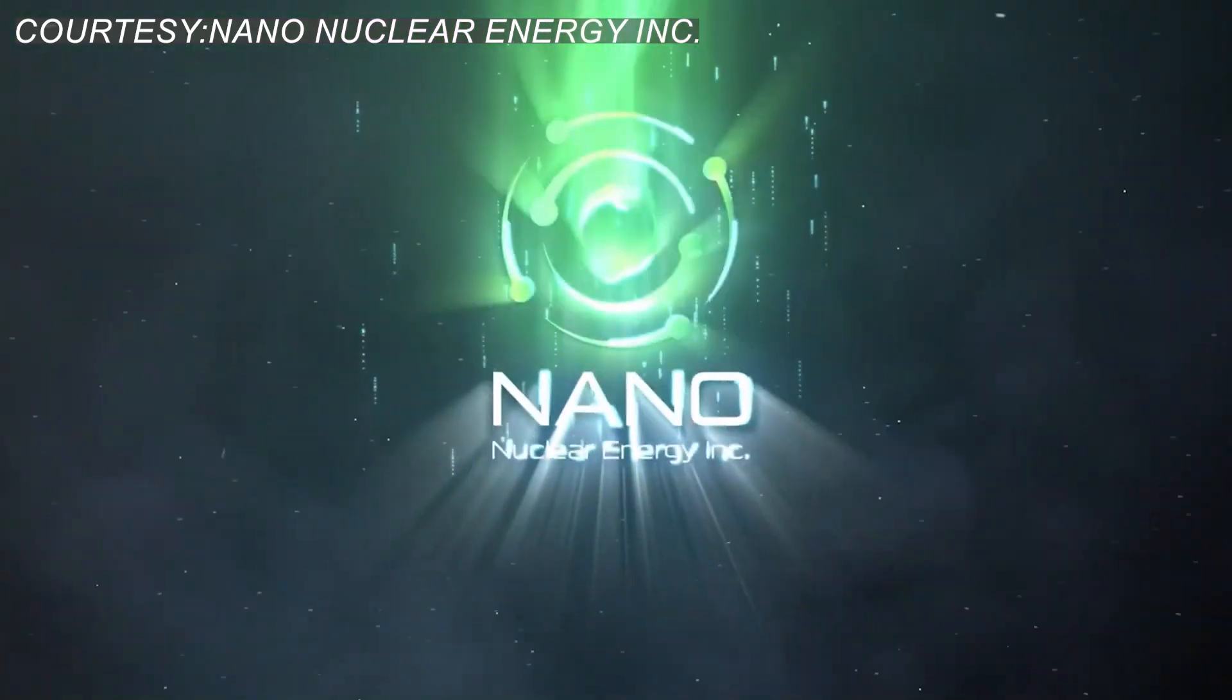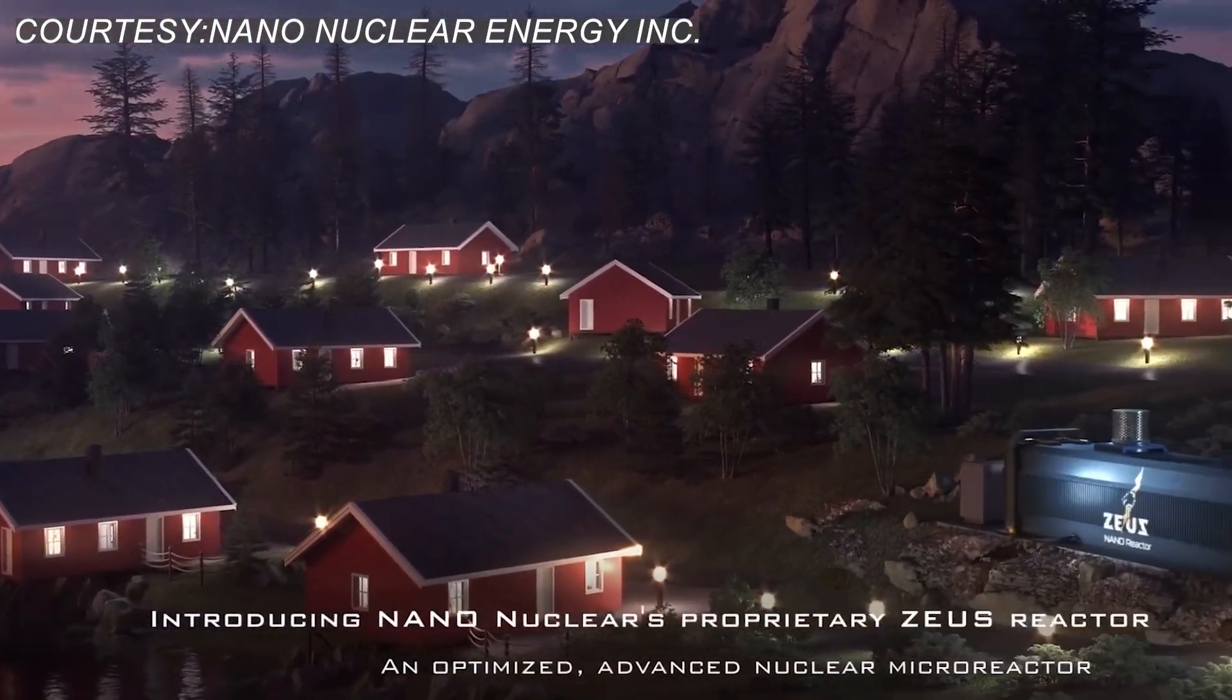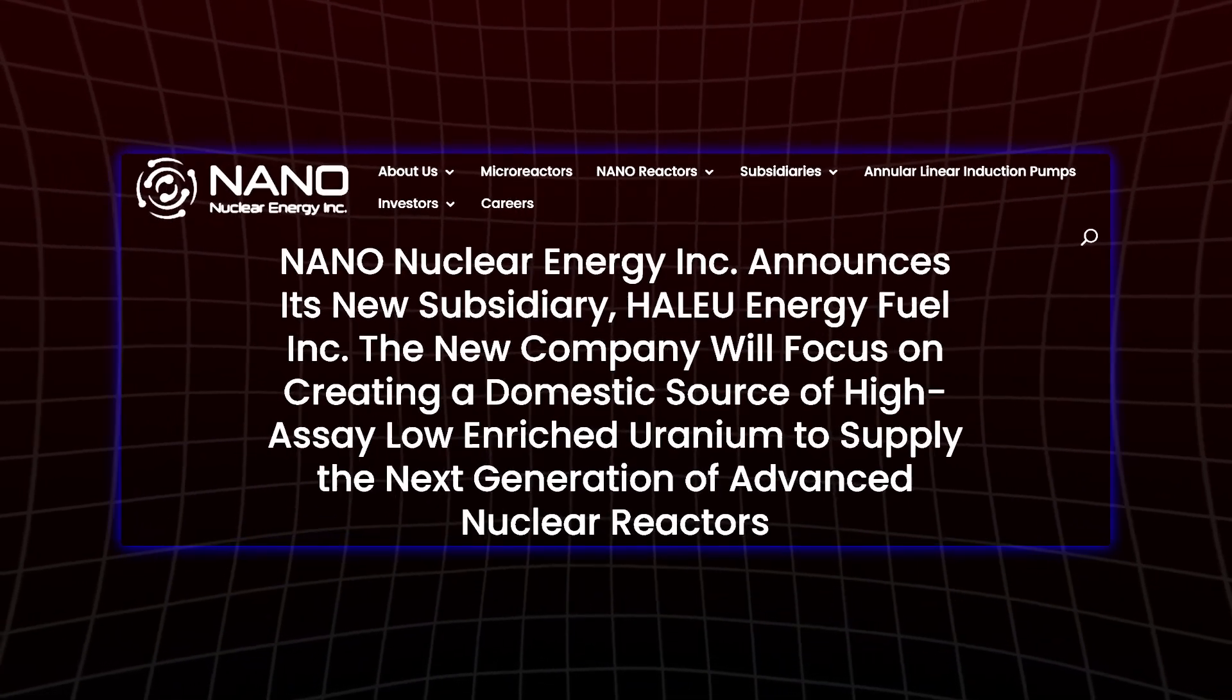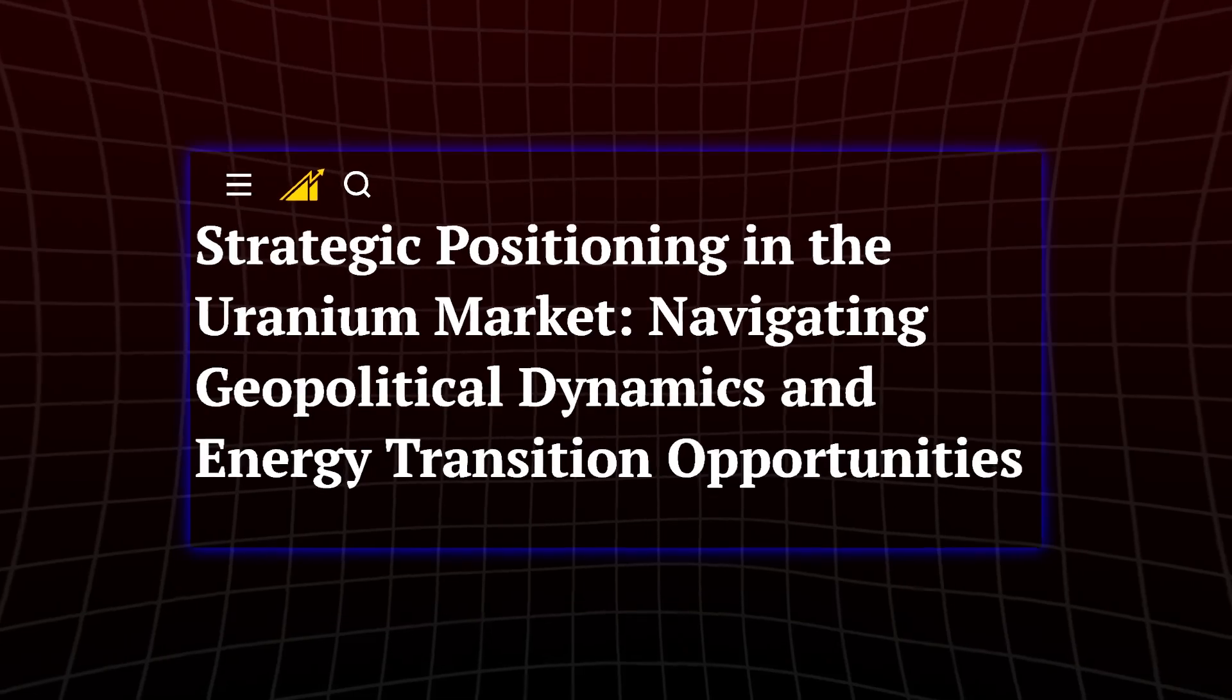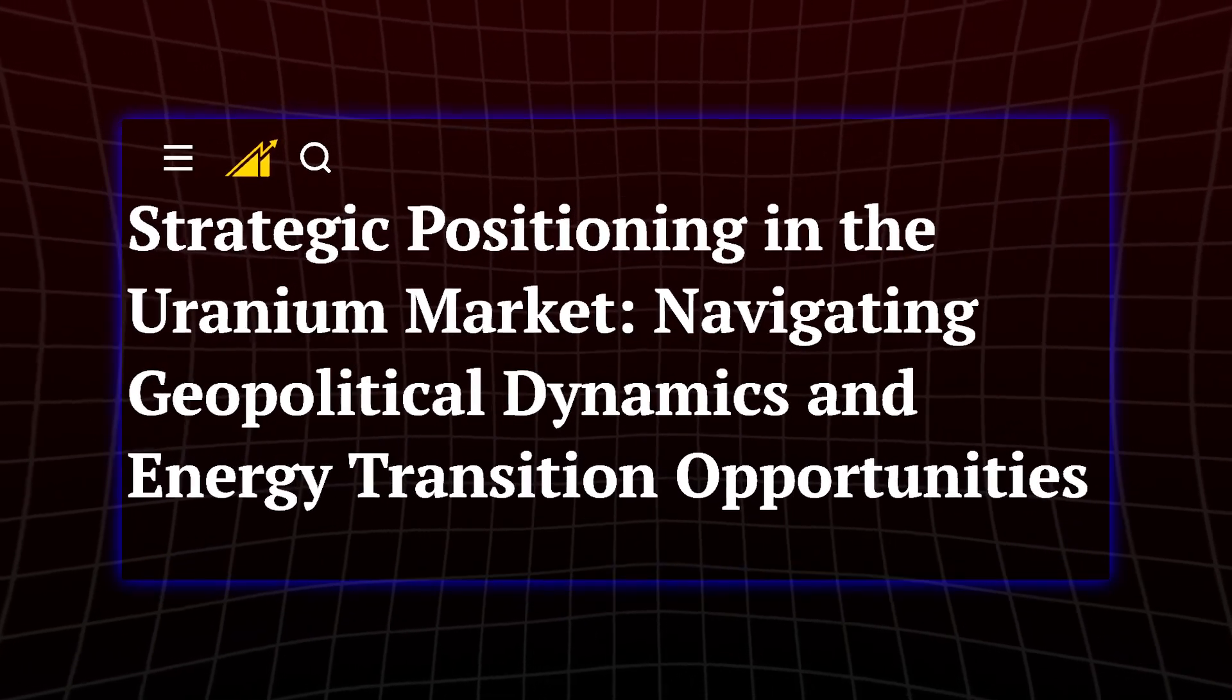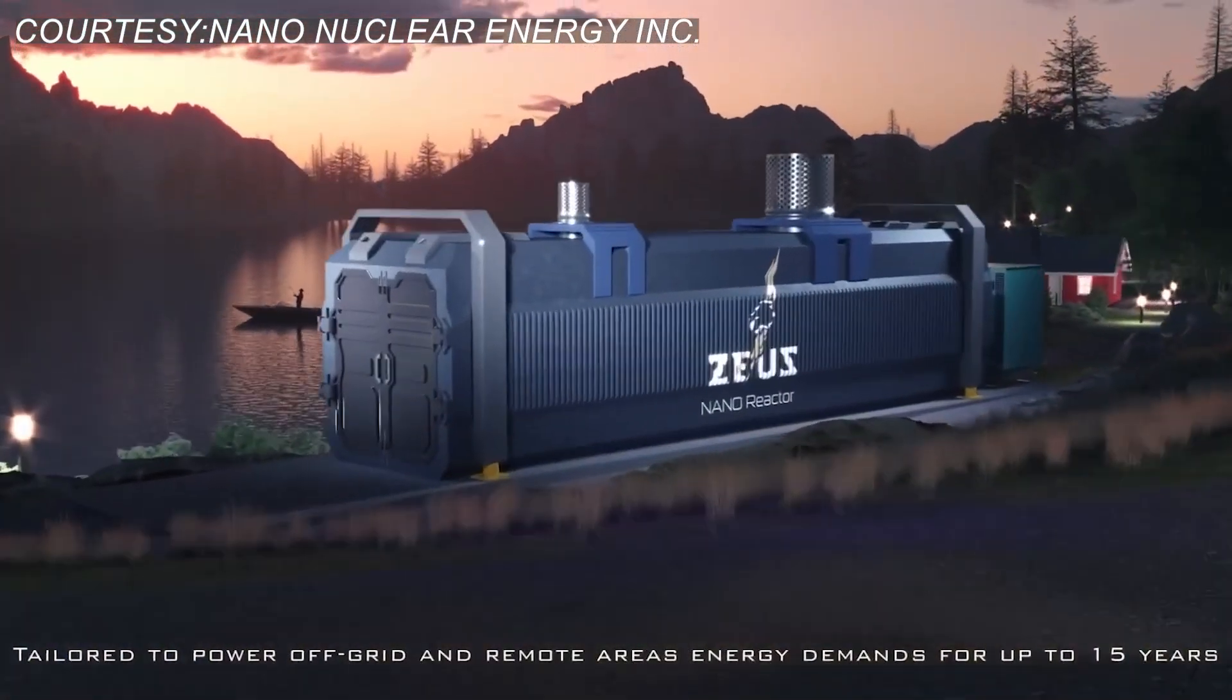What sets Nano apart isn't just its innovation, but its vertical integration. Through its subsidiary, the company produces HALU, a next-gen nuclear fuel that most advanced reactors, including their own, require. With uranium shortages looming globally, having internal control over fuel is a strategic moat many rivals lack. This model helps Nano preserve cash while progressing its tech.